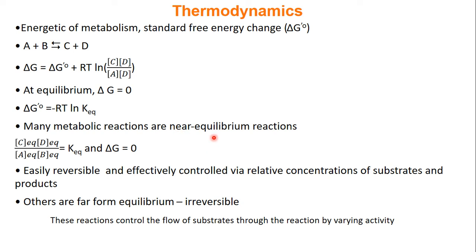Inside the cell, many metabolic reactions are near-equilibrium reactions. That means inside your cell, all your concentrations are near their equilibrium concentrations — you're near K-eq — so most of your enzymes are actually at zero delta G; you can go either forward or reverse. However, there are a select few that are very far from equilibrium — their delta G is very negative. We call these irreversible. These irreversible enzymes control the entire flow of substrates through any metabolic process. You can stop metabolism if you shut off these irreversible enzymes, or speed it up if you activate them.